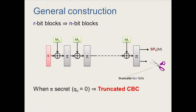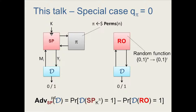Our result applies to a more general construction where message blocks don't have to be R bits — they can be arbitrary N-bit blocks, and the only constraint is that at the end you truncate to get the first R bits. Importantly, if you think of the permutation pi as secret and not public, this is exactly the truncated CBC construction. If the distinguisher makes no queries to pi, you can think of pi as coming from a block cipher and get directly an analysis for truncated CBC. For the remainder of this talk, I'll restrict to the truncated CBC scenario to give intuition for the proof.